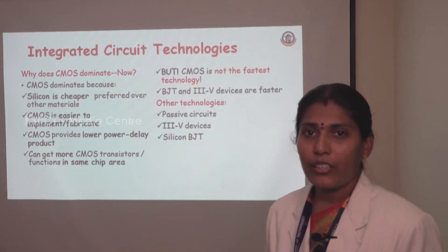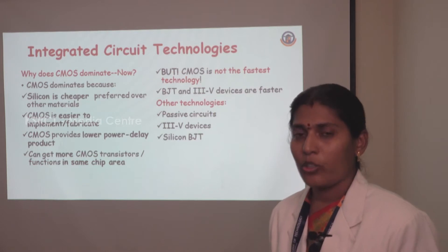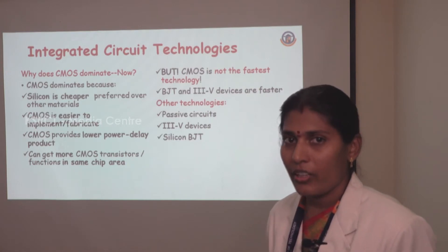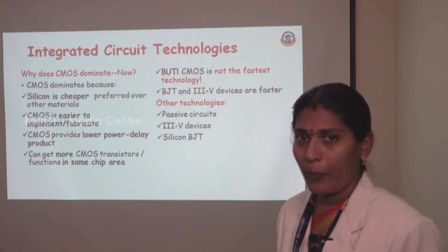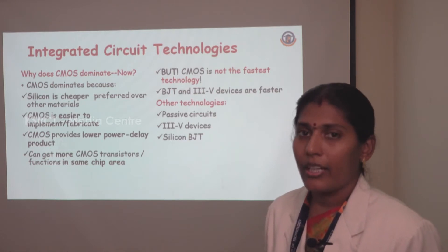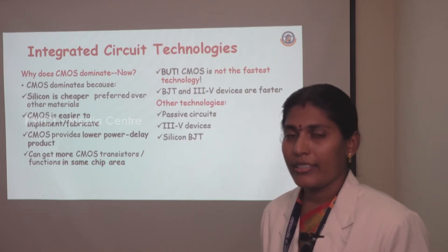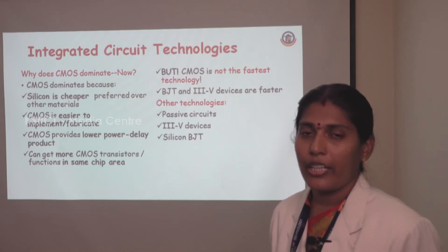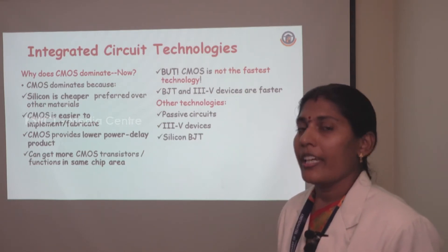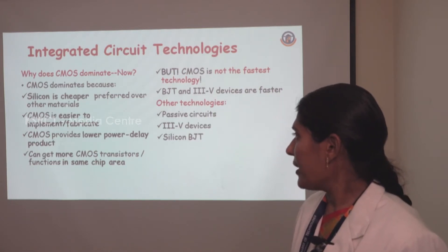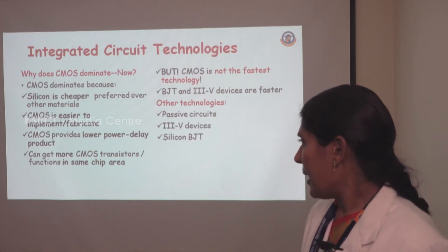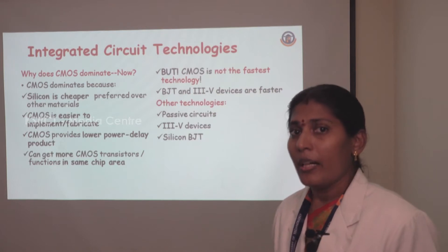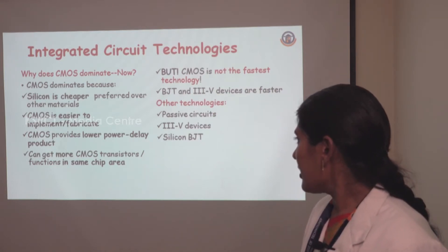What kind of technology is followed in VLSI? To integrate more transistors in a single IC, we use CMOS technology — Complementary Metal Oxide Semiconductor — which is a combination of NMOS and PMOS transistors. We follow this technology because it is easy to fabricate, easy to implement, and provides a low power-delay product. Other technologies include BJT and other bipolar devices.